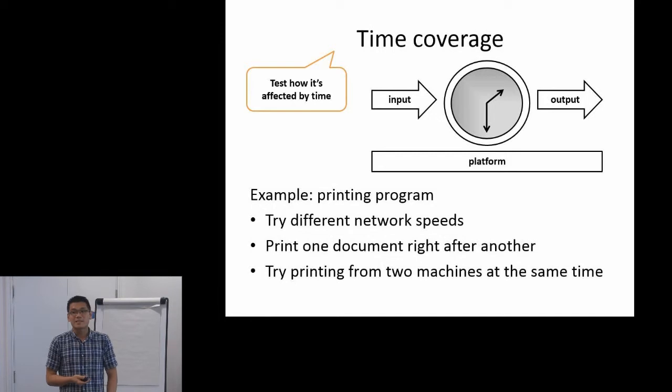And then time coverage, basically anything to do with time. It can be speed or you try to manipulate, like for example, try to print from two machines at the same time. Anything that has the time aspect to it can be included in this category.